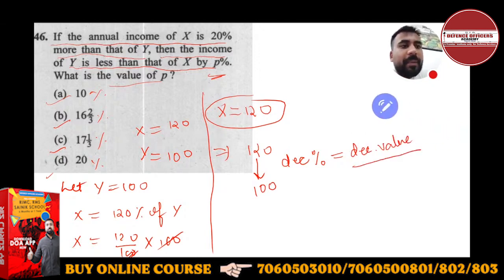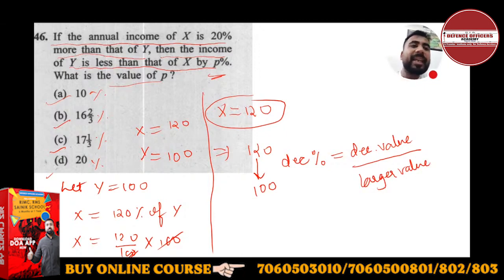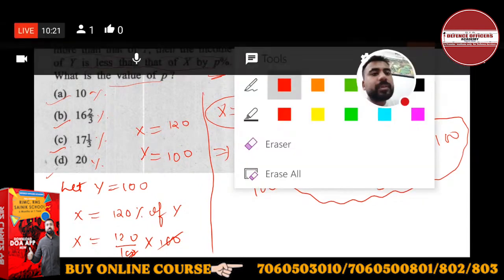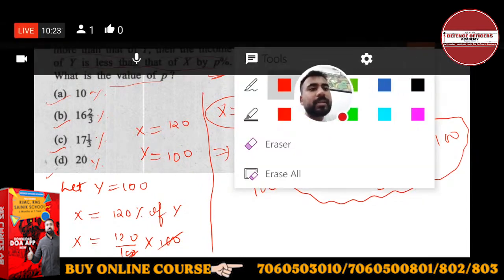This formula is very important. Whenever we find decreasing percentage, in the numerator we have decreasing value, in the denominator we have larger value. In the increasing case, numerator has increasing value and denominator has smaller value. So: decreasing value over larger value times 100. If you put values here, you'll get your answer.